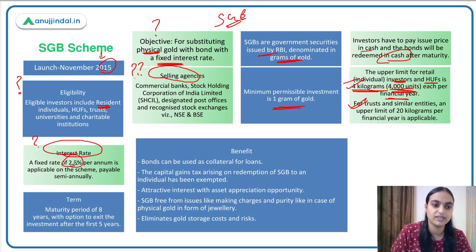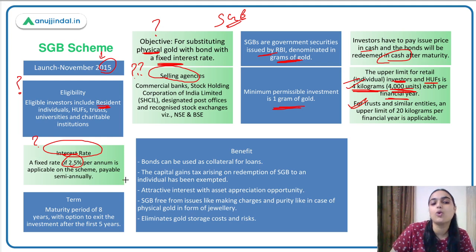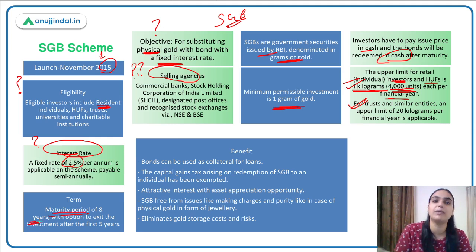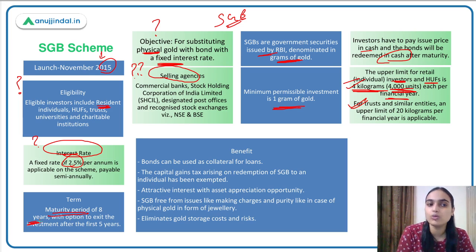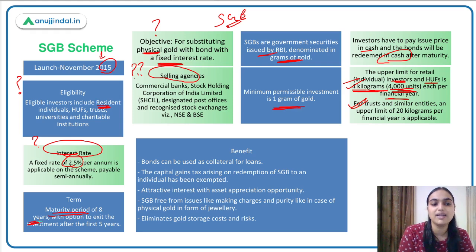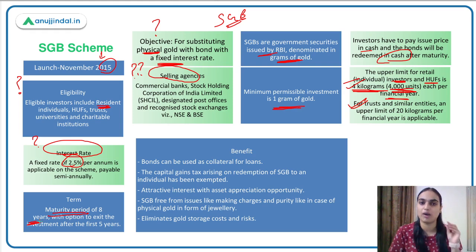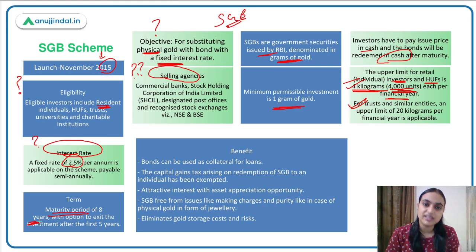The interest rate on these bonds is 2.5%. Regarding the tenure, if you buy these bonds you must hold them for a period of eight years, after which you can redeem them and receive cash based on the prevailing value of gold. However, there is also an option to exit after five years if you don't want to hold for the full term. Holding for eight years provides better returns and tax benefits.